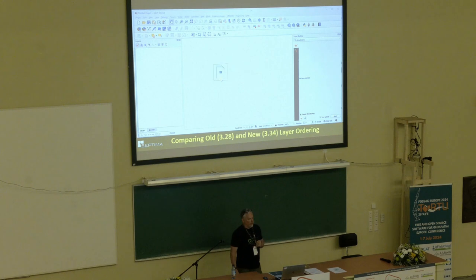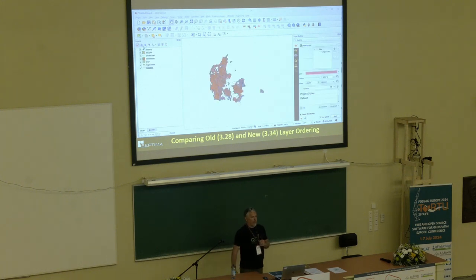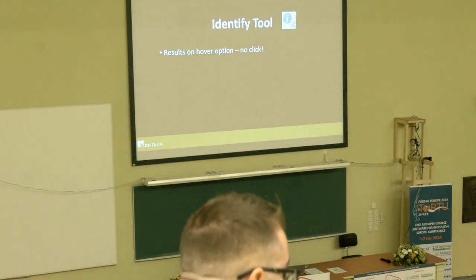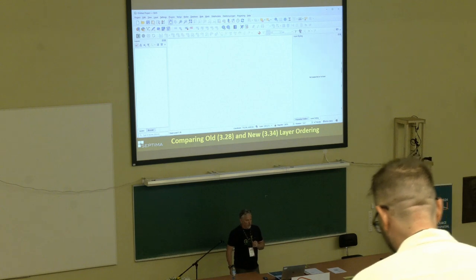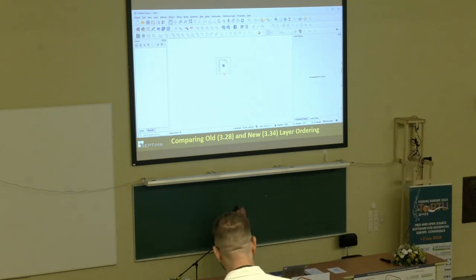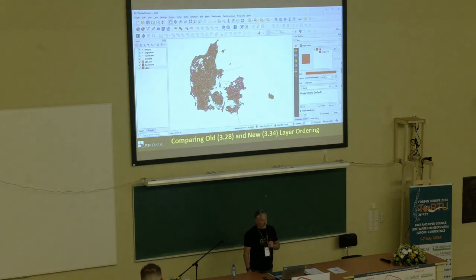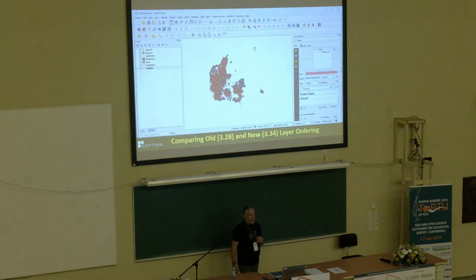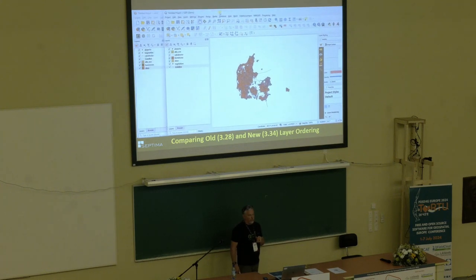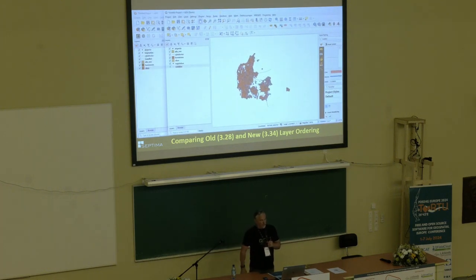To see how this works: in 3.28, if I add seven layers to QGIS, they get added alphabetically with mixed geometries. But now in 3.34, with that option checked, I add the same number of layers and they get ordered automatically by geometry type.